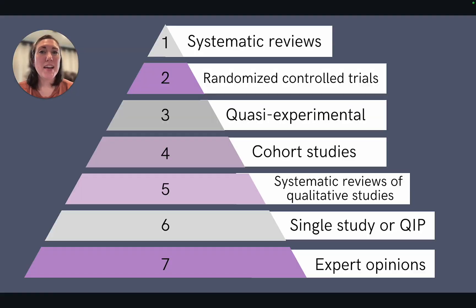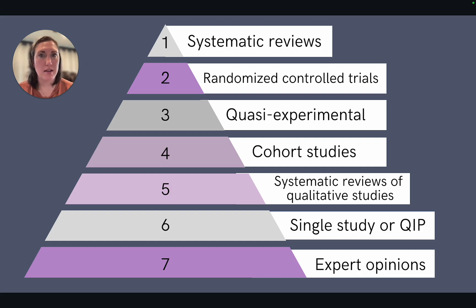You can think of the levels of evidence like a pyramid. At the bottom, these tend to be made up of qualitative studies and professional opinions, whereas at the top of the pyramid are the syntheses of rigorous quantitative studies.